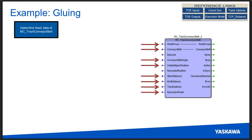Now let's figure out the fixed data for the MC track conveyor belt function block. Looking at the inputs — axis group, conveyor belt axis, conveyor belt origin, initial object position, start distance, end distance, track options, and execution mode — we'll be using the default immediate execution mode in this application.